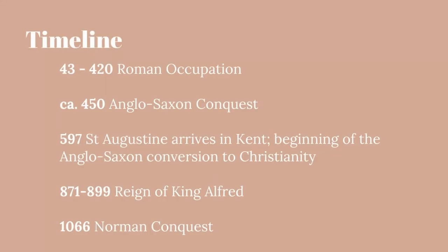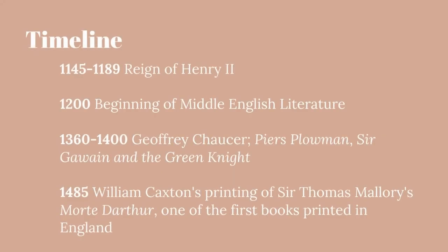From 871 to 899 you have the reign of King Alfred, also known as Alfred the Great. In 1066 you have the Norman conquest, when a new French ruling class came in and took over England. From 1145 to 1189 you have the rule of King Henry II. By 1200 you have really the start of what we consider Middle English literature — anything before that would have been very similar to Dutch or German, very hard for a modern reader.